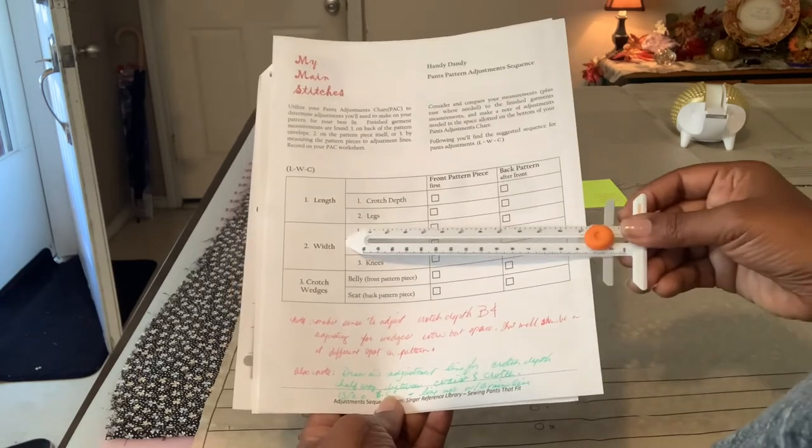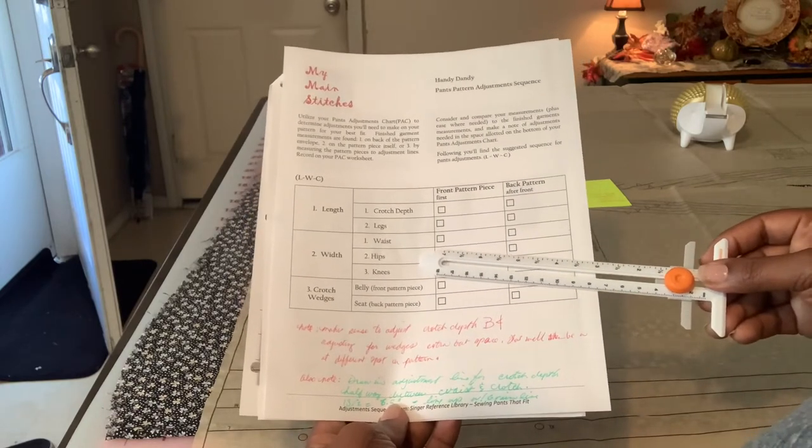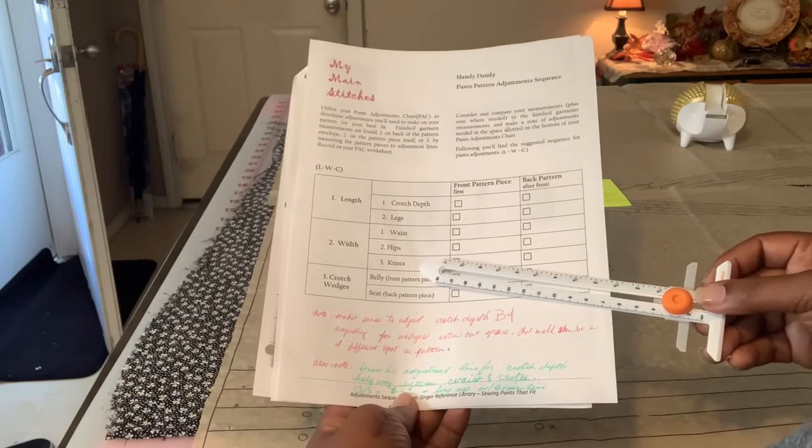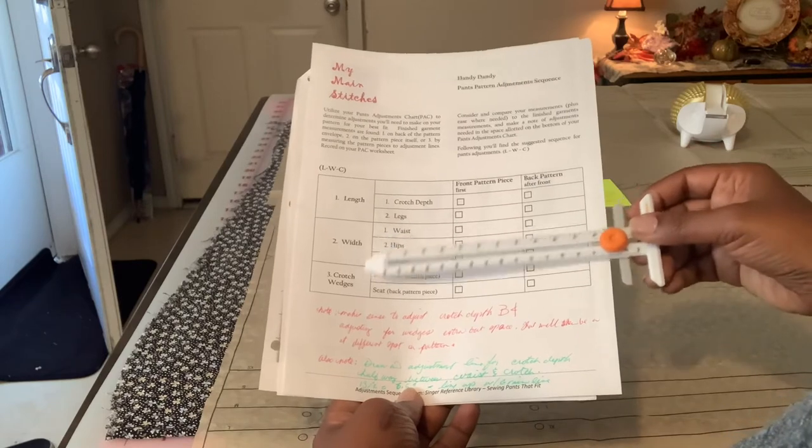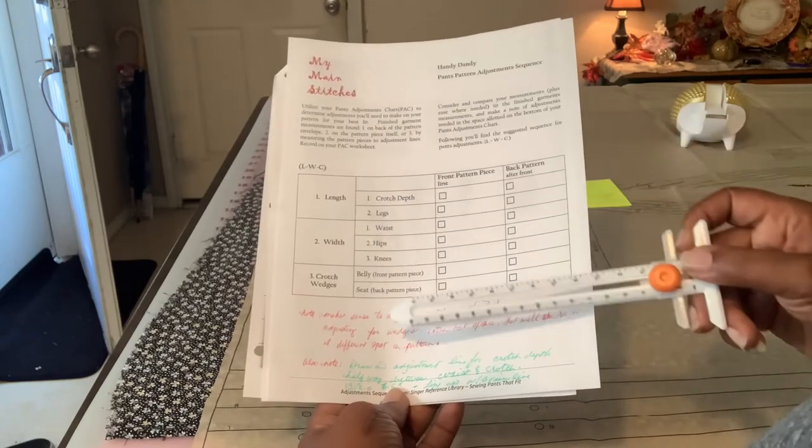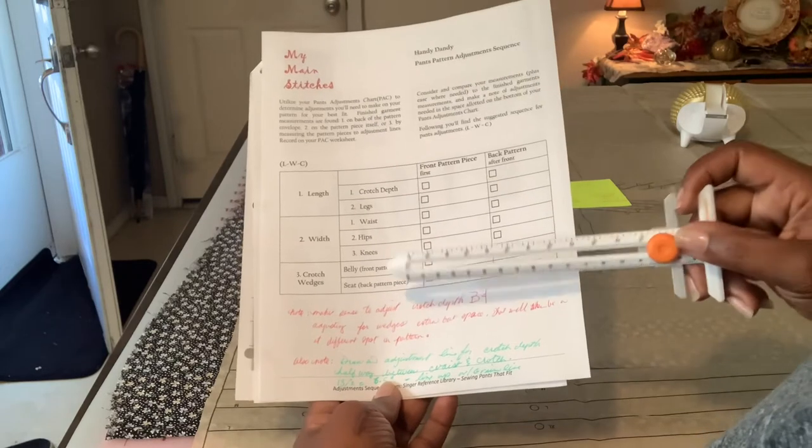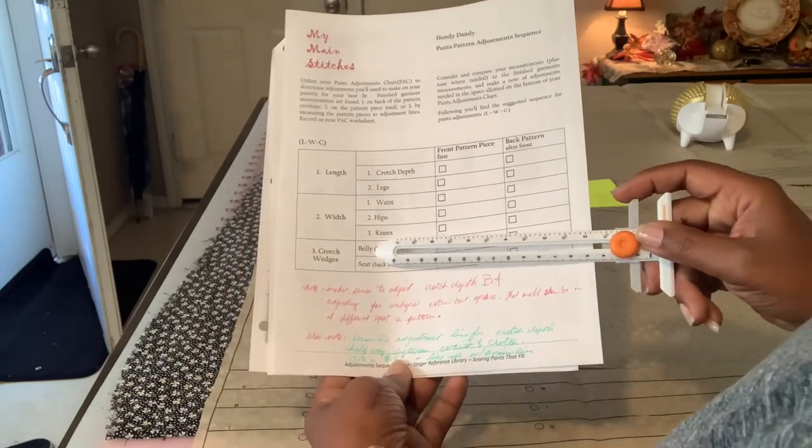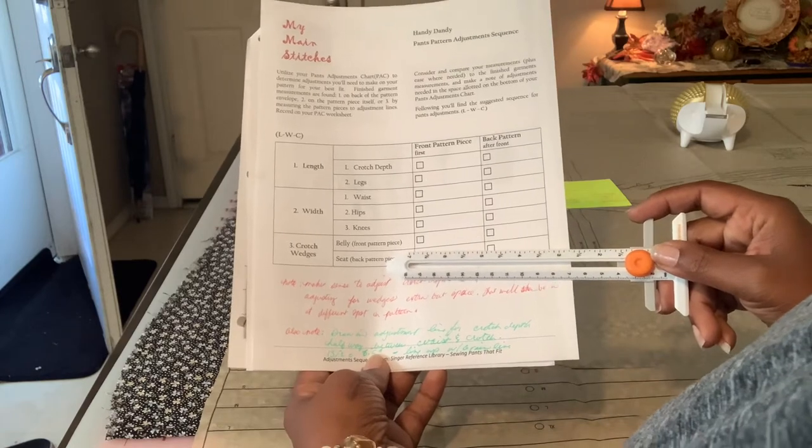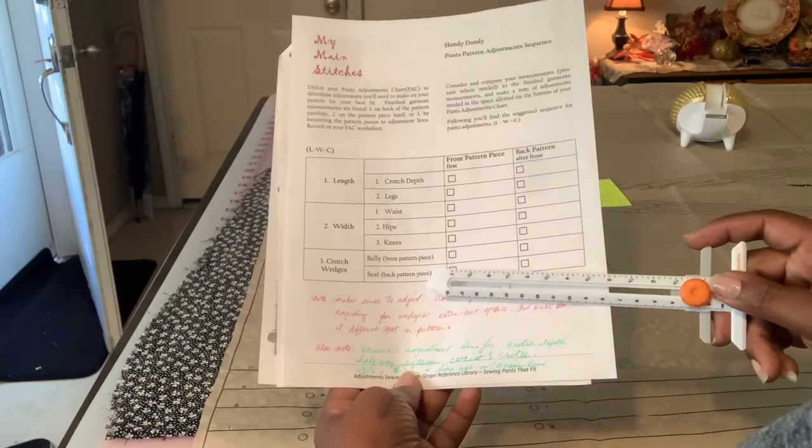Width adjustments would be next. If you wanted or needed to adjust the waistline width, the hips width, sometimes people make adjustments for knees or other, they have like bow legs or knock knees or something like that. You can do that adjustment second with the width adjustments. And these are the order of adjustments within width. And this is the order of adjustments within the length adjustments. So last, you'll always do your crotch wedges. And we'll talk about what that is later, but just so you know, like if you have a seat, they call it the seat, but if you need to adjust for, whether you need to take in some or let some out to get that fit just right for the seat, those types of things would be the last adjustments that you make.